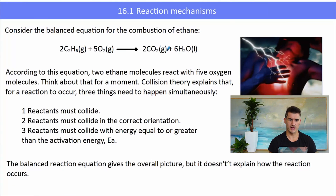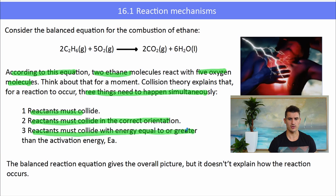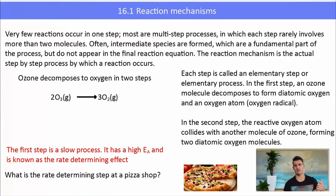Here is a reaction between ethane and oxygen. According to the equation, we need five oxygen molecules to collide with two ethane molecules for the reaction to occur. Now that gives us an overall picture, but it doesn't explain how the reaction occurs. Reactants must collide, they must have the right amount of activation energy, and they must be in the right orientation.